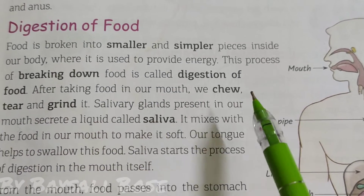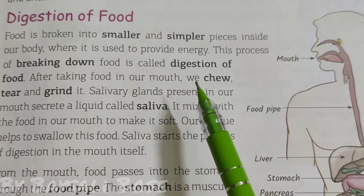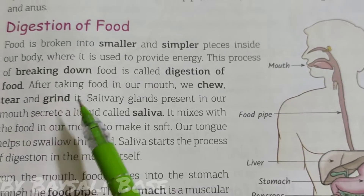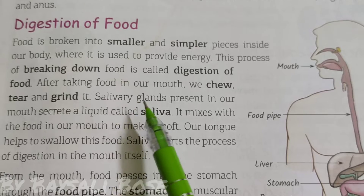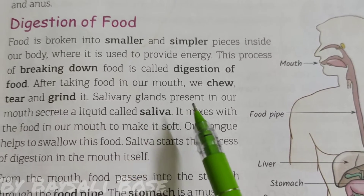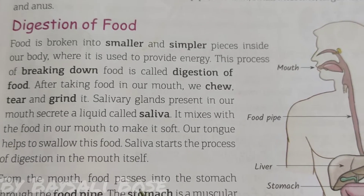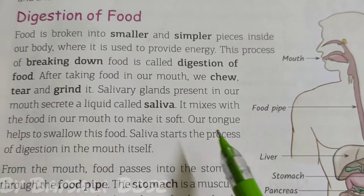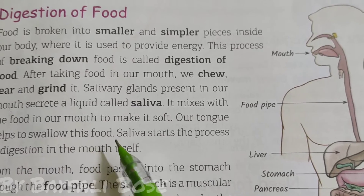After taking food in our mouth, we chew, tear and grind it. Salivary glands present in our mouth secrete a liquid called saliva. It mixes with the food in our mouth to make it soft. Our tongue helps to swallow this food.